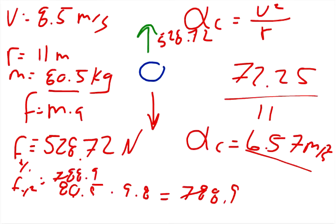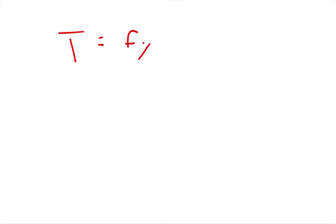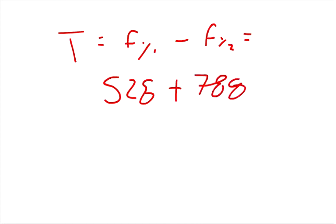And so when we add up the tension on the vine, the tension in the rope is going to equal f_y1 minus f_y2. So that equals 528, positive 528, minus the negative 788. So minus makes it plus, plus 788.9, and these are in newtons.